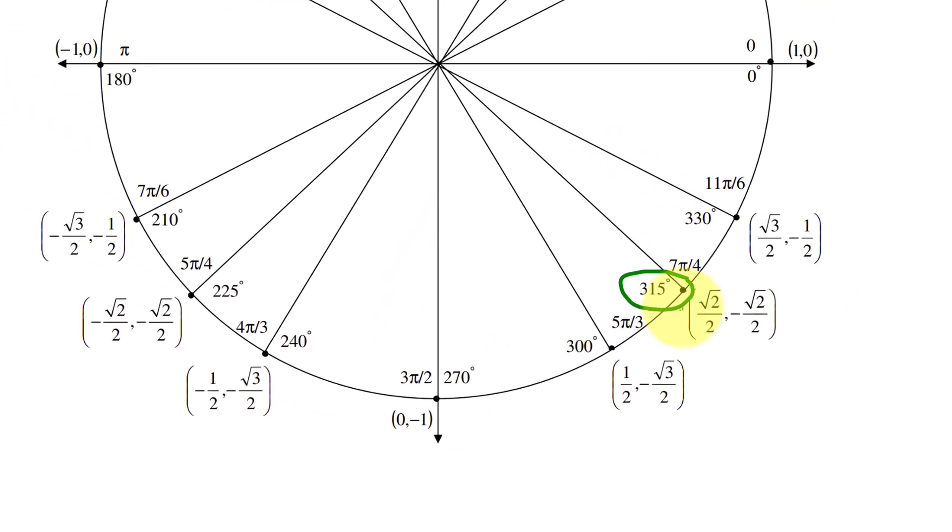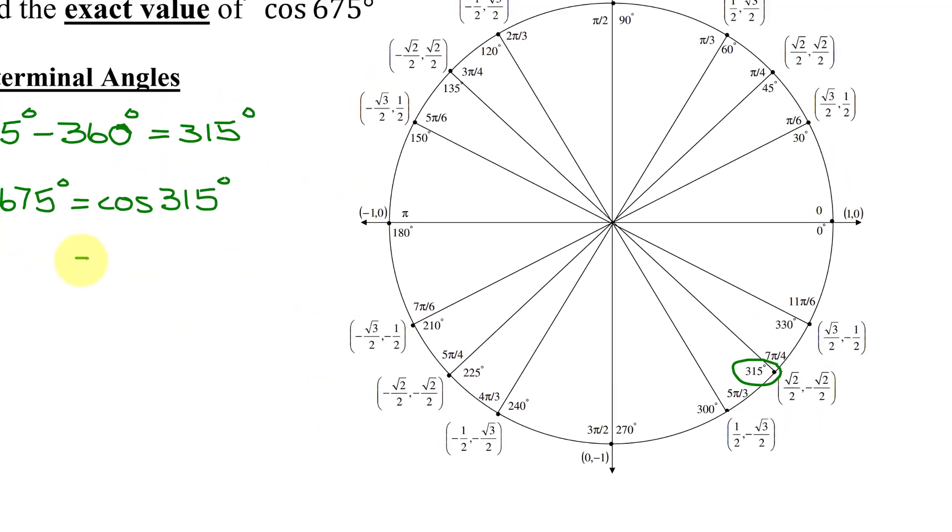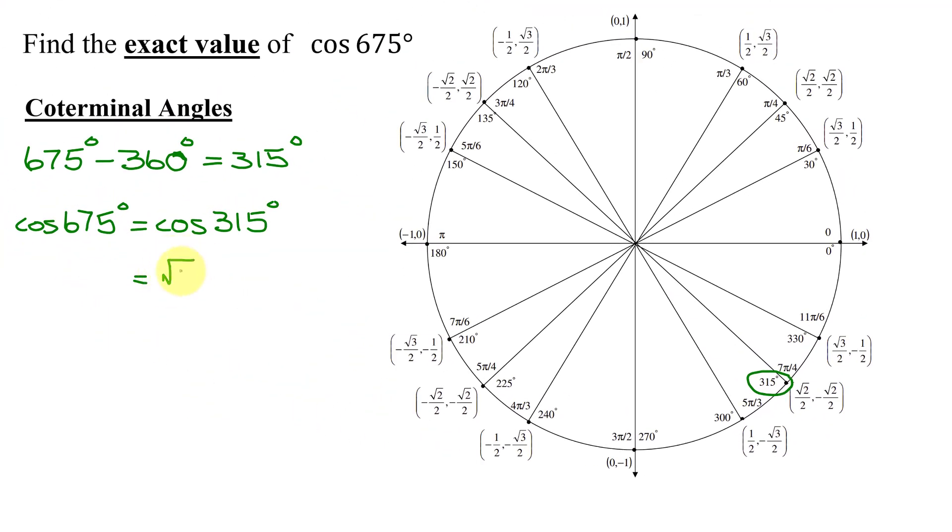Remember, here's 315 degrees. The x-coordinate of this point is the cosine of that angle. The y-coordinate of that point is the sine of that angle. I need the cosine of 315 degrees, so that is going to equal the square root of 2 divided by 2.